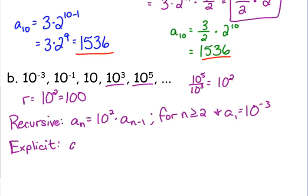Our explicit rule, a sub n is equal to the first term, 10 to the negative 3rd, times the common ratio to the n minus 1. Now, here's a good example of where we actually can do some simplifying very easily. We have the same base. So we can simply add their exponents once we do this power raise to a power thing. How do we handle a power raise to a power?